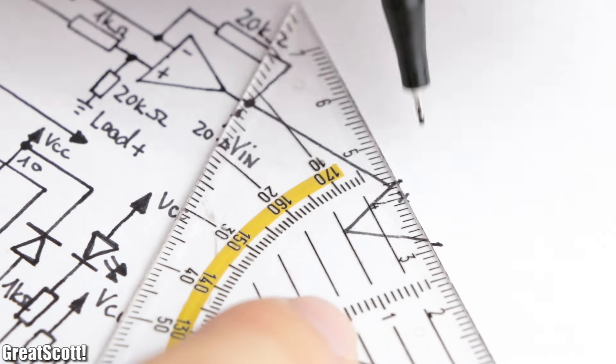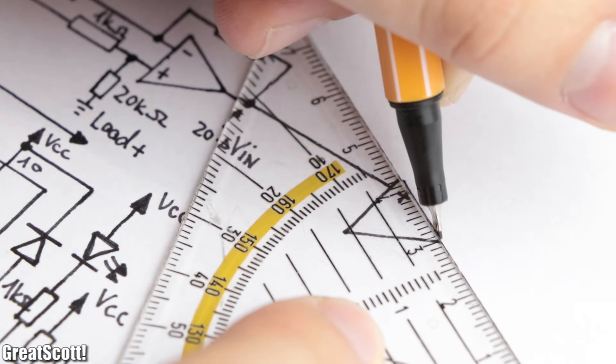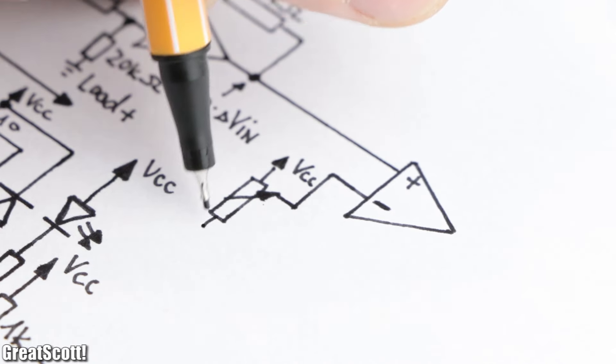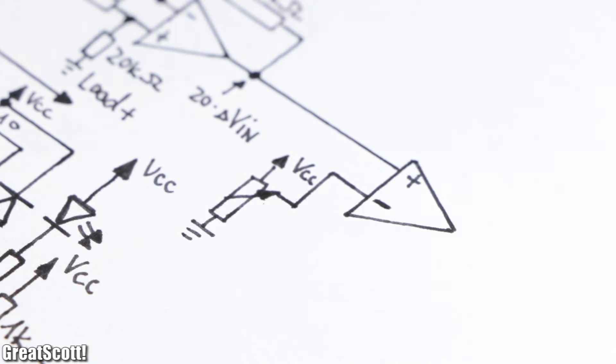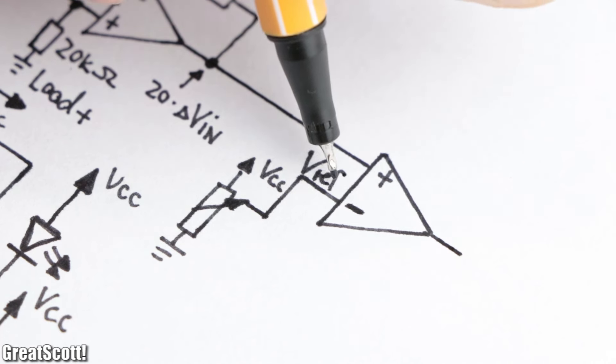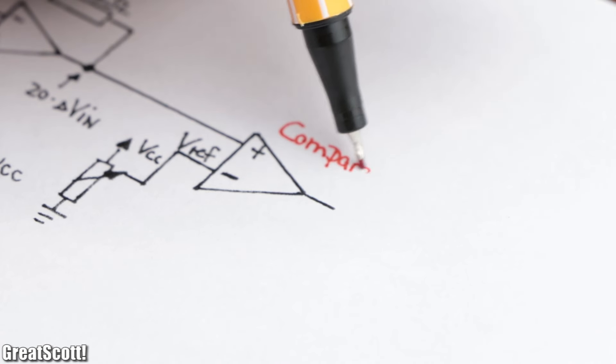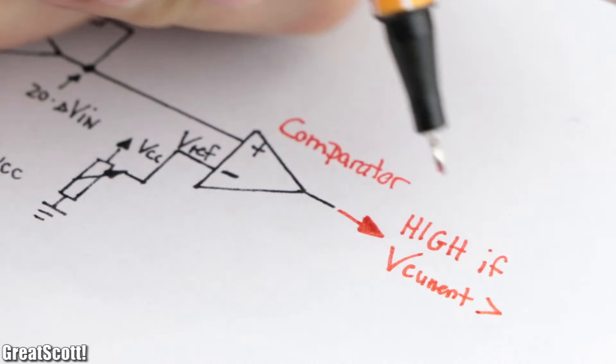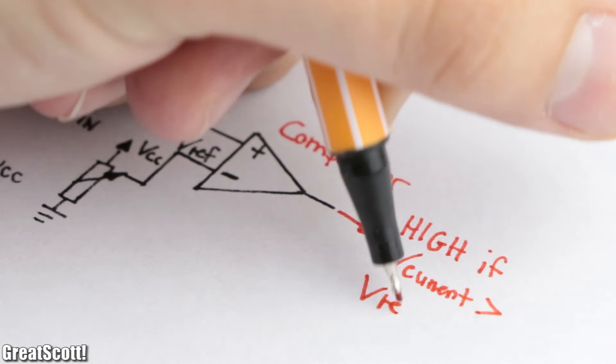This amplified signal then connects to the non-inverting input of a second op-amp whose inverting input is directly connected to a potentiometer. By tuning the potentiometer we can create a variable reference voltage, and since the op-amp acts as a comparator, its output will be pulled high if the current sense voltage is higher than the reference voltage.